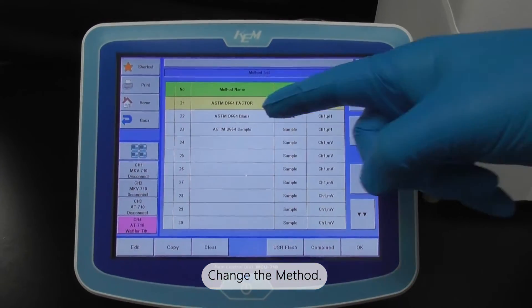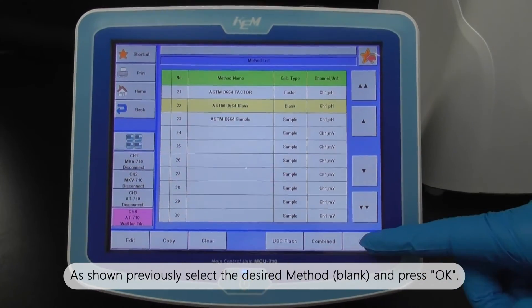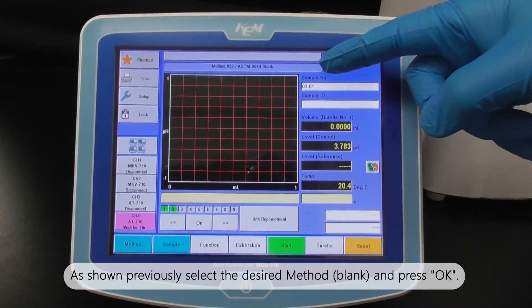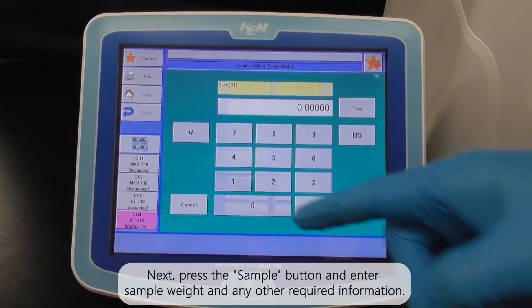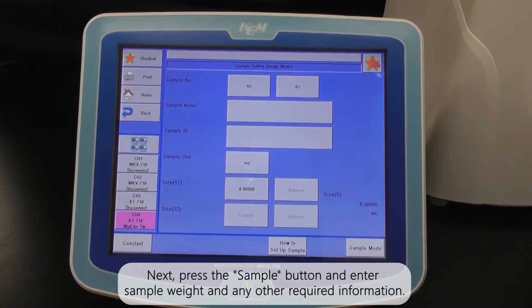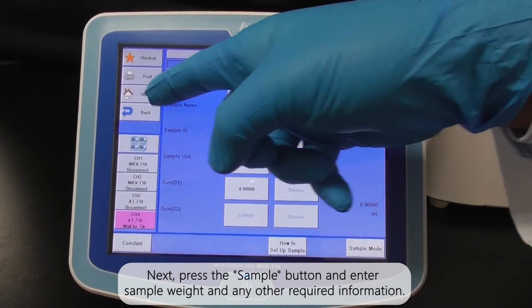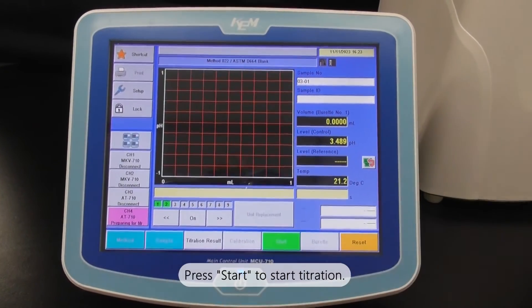Change the method. As shown previously, select the desired method, blank, and press OK. Next, press the sample button and enter sample weight and any other required information. Press start to start titration.